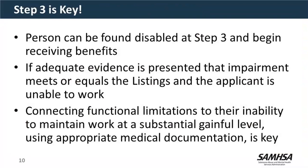Step three is key for us as disability adjudicators. If we can allow someone at step three, they can receive benefits right away. We're looking at whether we have sufficient evidence — typically testing or imaging — from an acceptable medical source. We're also looking at functional information: is it consistent with the impairment and the allegations? Steps four and five look at other ways we could allow the person, but step three is where we can most efficiently get an answer to the claimant.